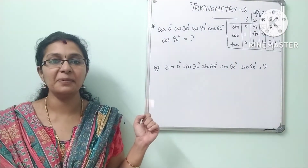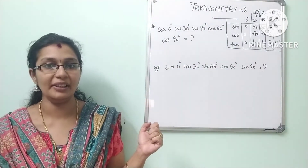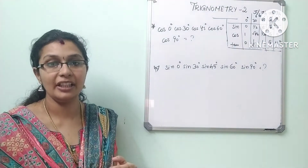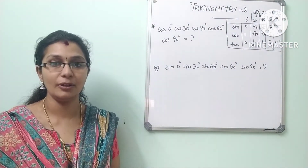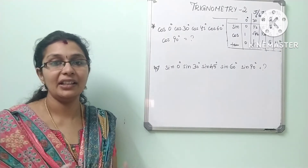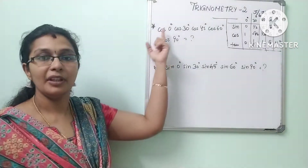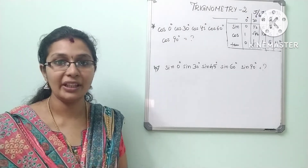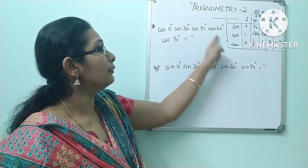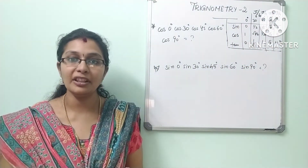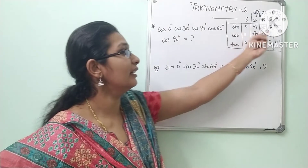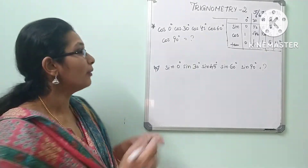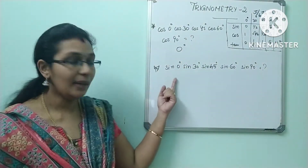Next set of questions. The first: cos 0° × cos 30° × cos 45° × cos 60° × cos 90°. Since cos 90° = 0, and any number multiplied by 0 gives 0, the answer is 0. Second: sin 0° × sin 30° × sin 45° × sin 60° × sin 90°. Since sin 0° = 0, multiplying anything by 0 gives 0. The answer is 0.